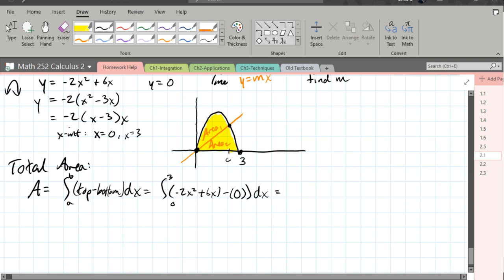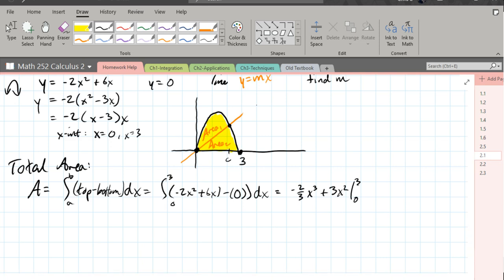So anti-power rule. Negative 2x squared is going to turn into an x cubed, negative 2 thirds. 6x is going to become 3x squared. I'm doing guessing and checking here. Pretty good at guessing, but you do need to make sure that you check. And when I take derivative, I do get back to the original there.